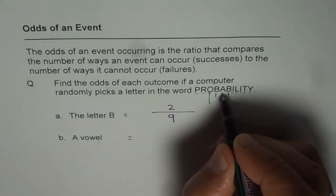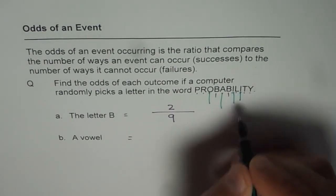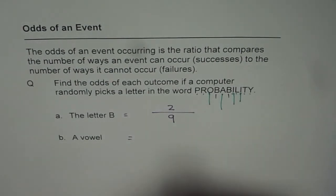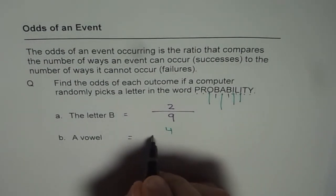So 1, 2, 3, 4. So we'll take 4 only, right? Sometimes Y is considered a vowel, but we'll just take 4. So 4 are in favor.